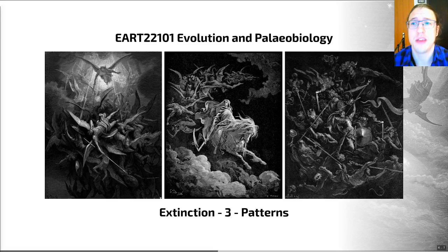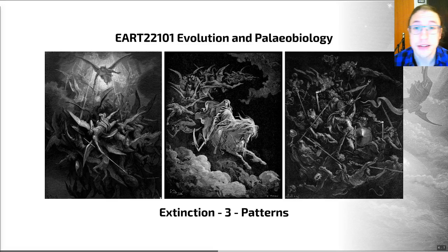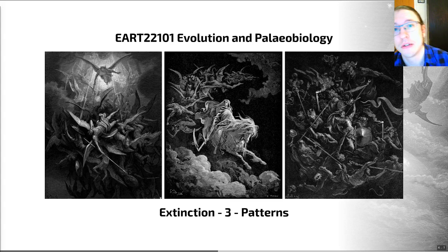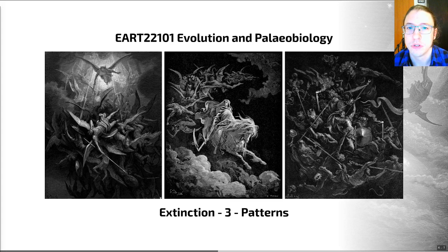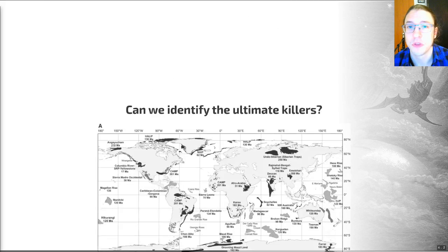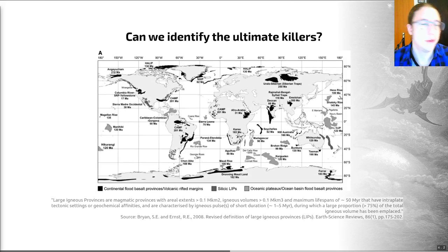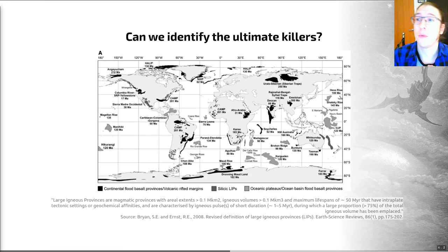Hello everyone and welcome to video number three of extinctions. In this video we're going to try and understand what is behind mass extinctions. We're going to see what patterns we can identify in mass extinctions and look at what that means for the potential causes. We'll finish with a brief look at what survives or tends to survive mass extinctions — really looking into whether we can identify common ultimate killers.